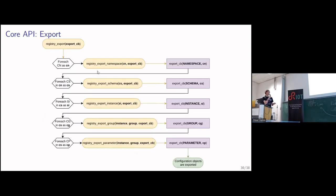The registry export is similar, except that at every level of the tree, each element would be exported by calling the export function and providing the namespace and then the configuration — it propagates all the way down.